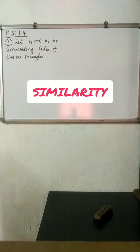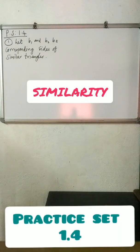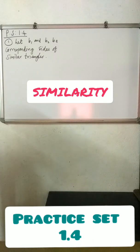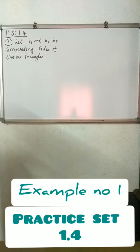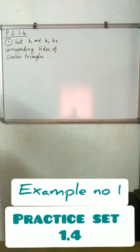Practice set 1.4, first example: the ratio of corresponding sides of similar triangles is 3 to 5. Find the ratio of their corresponding areas.